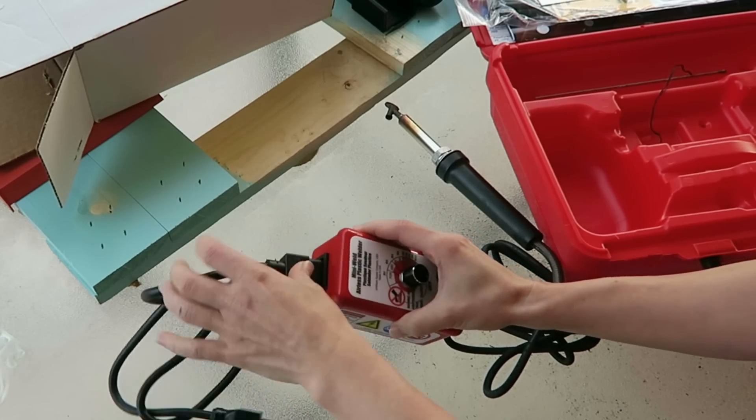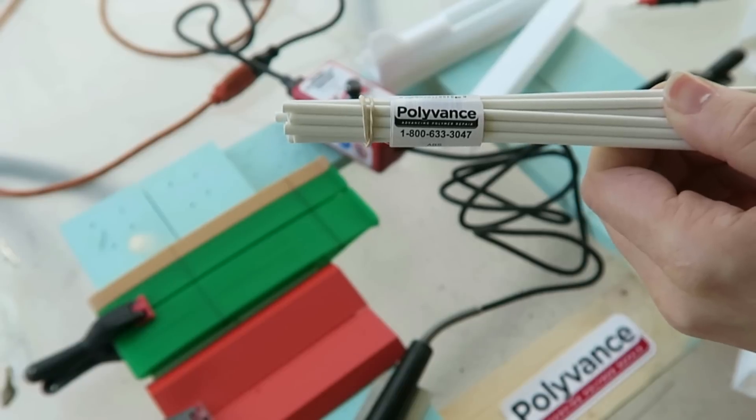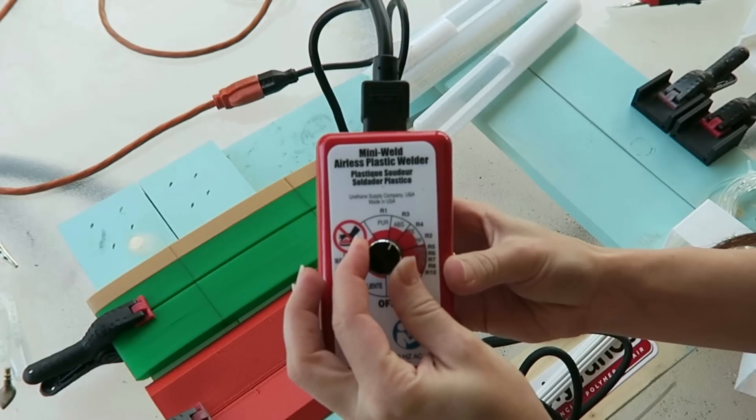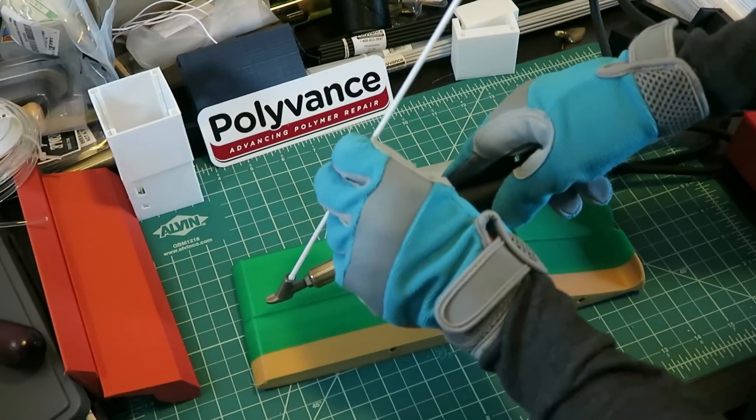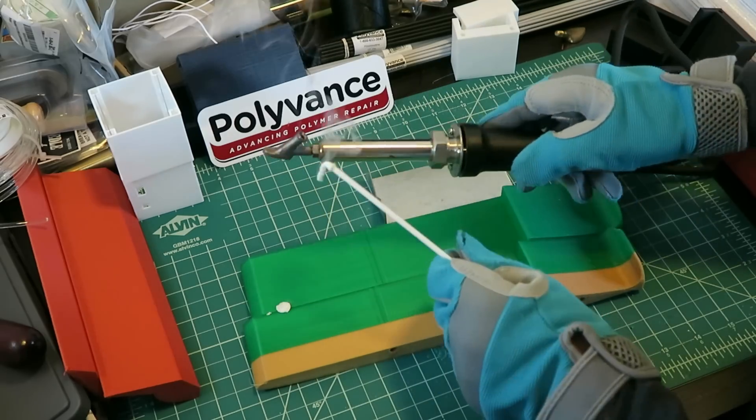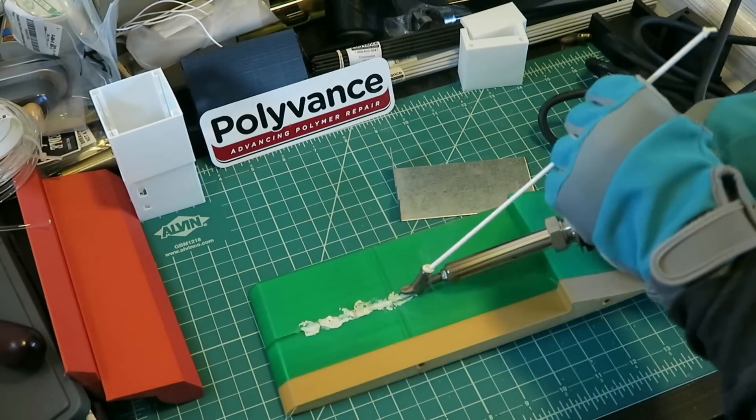I'm going to try ABS first, so I'm dialing to the ABS slice of pie on the temp control. While that's preheating for a couple minutes, let me show you my indoor attempt with ABS. Not only was my ventilation system not enough and the fumes everywhere, but also I did not have the pieces clamped down. So definitely don't do it that way.